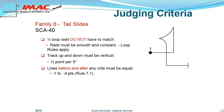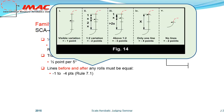With rolling elements on the interior lines, they must be centered, having equal line segments before and after. Figure 14 in Rule 7.1 is used to determine the actual deduction in the range of one to four points.